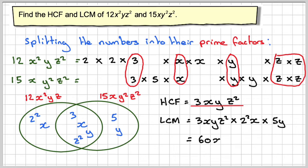We've got x times x, which is x². y times y, which is y². And then just a z² there. So the HCF is 3xyz², and the LCM is 60x²y²z².